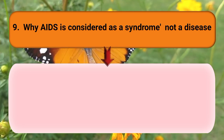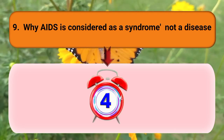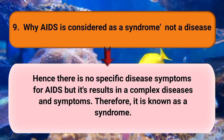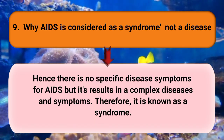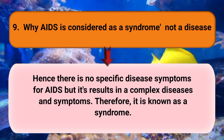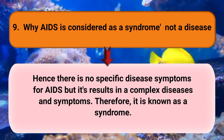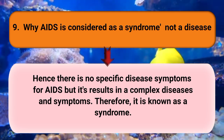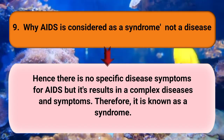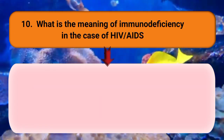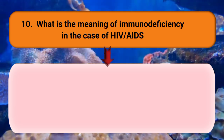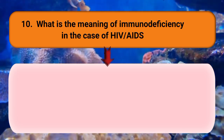Why is AIDS considered a syndrome and not a disease? There is no specific disease symptom for AIDS, but AIDS results in a complex set of diseases and symptoms. Therefore, it is known as a syndrome.